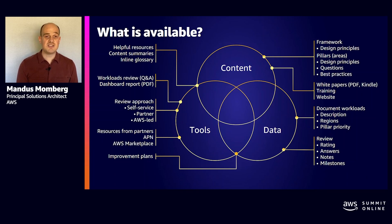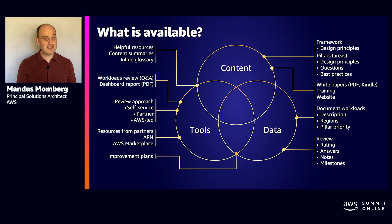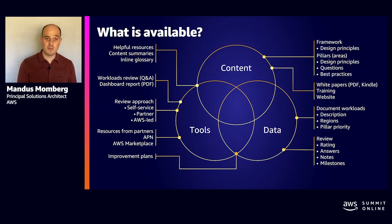We also have the well-architected tool, which is a service in the AWS console that allows you to go through a slew of questions about your architectural decisions regarding the five pillars. This is a self-service tool that you can assign to all of your teams through all of your business, and it allows you to highlight any risks that we might identify. When we identify those risks, we also provide you with implementation details of how to remediate them and what steps you can take to make sure those risks will not be a problem down the road.